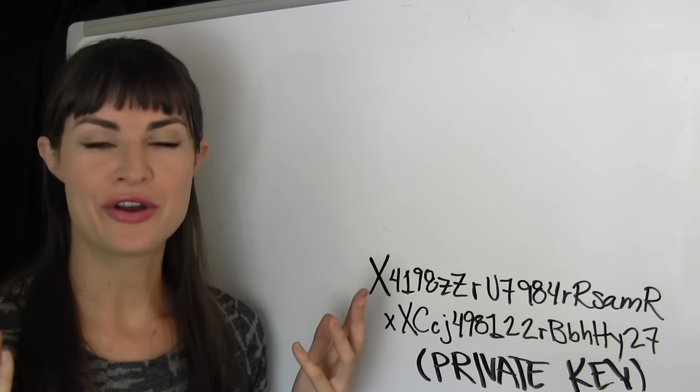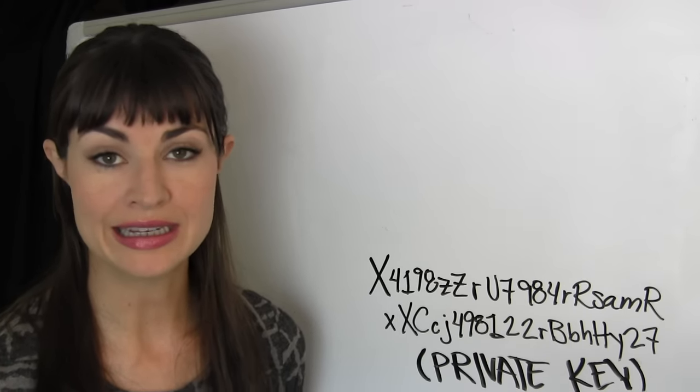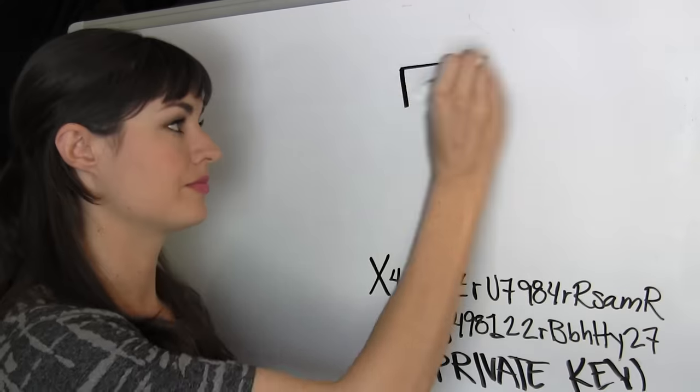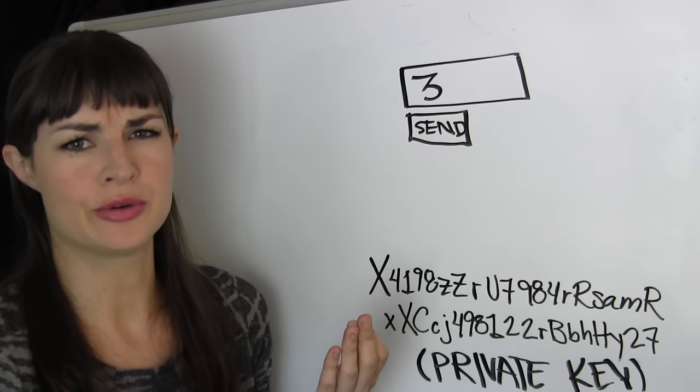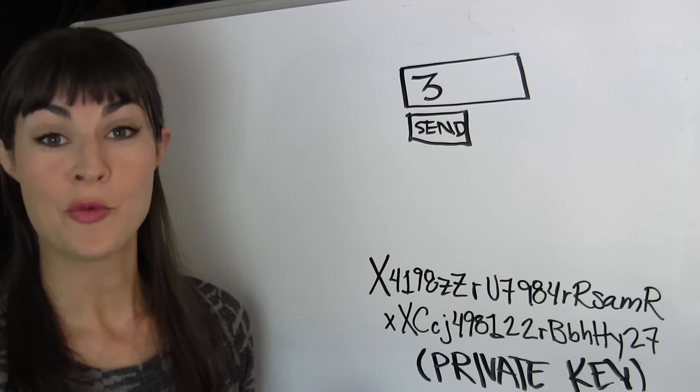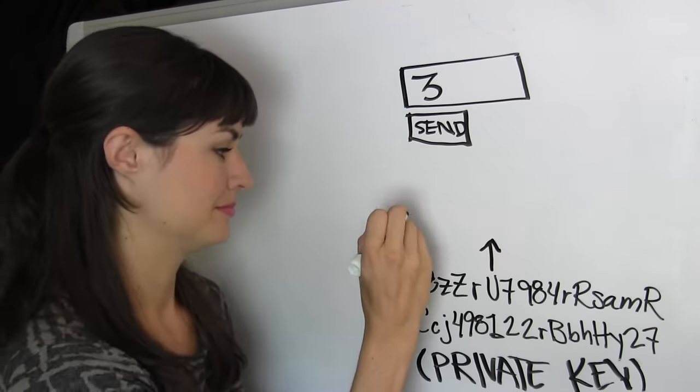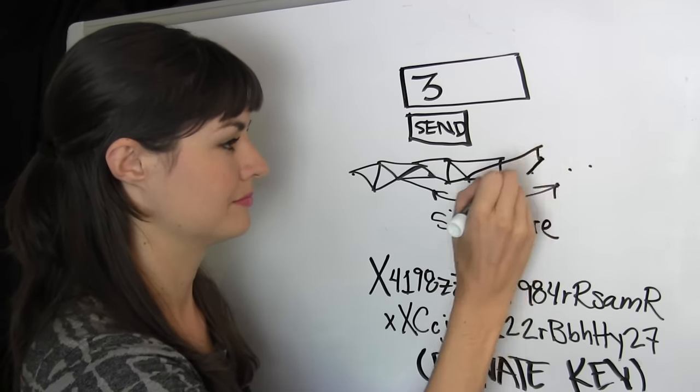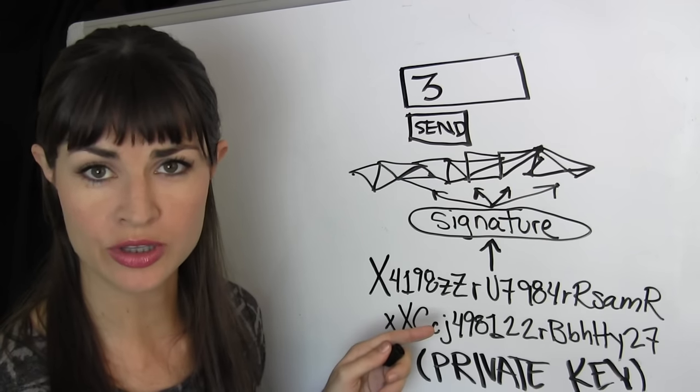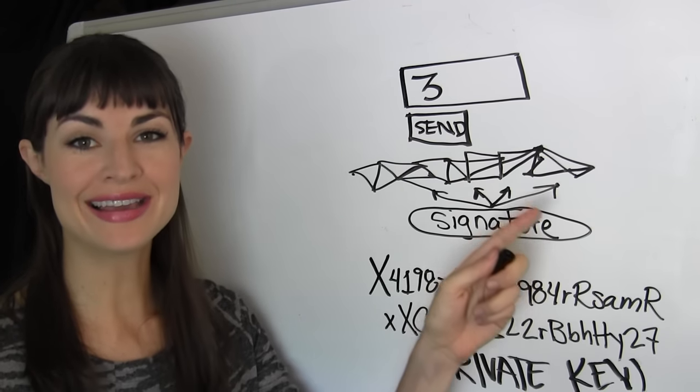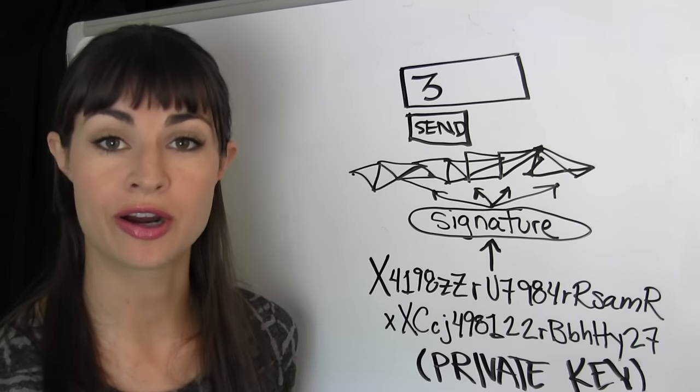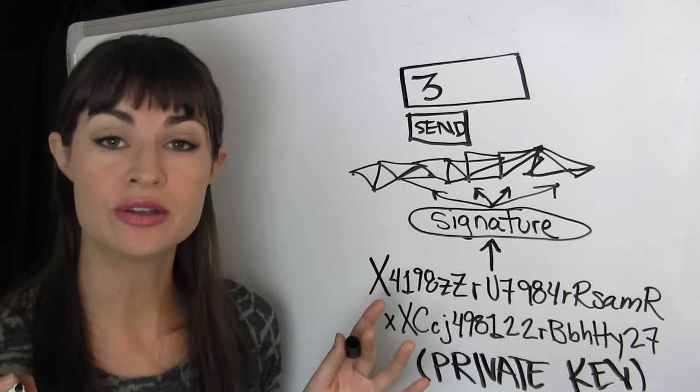So when using your hypothetical eMoney wallet and you want to send Amanda three eMoneys for covering lunch yesterday, all you as the user do is tell your wallet you want to send three eMoney and click send. Easy enough. What your wallet is really doing, however, is creating a signature of your private key that only you know that broadcasts the amount you want to send and to whom to the entire rest of the network so that they can update their ledgers accordingly.